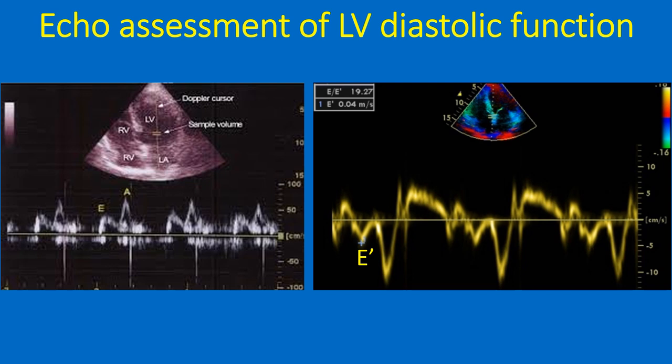Though there are several parameters for evaluation of left ventricular diastolic function by echocardiography, the most commonly used are the Pulse Doppler Mitral E-by-A ratio and Tissue Doppler Mitral E-by-E prime ratio.